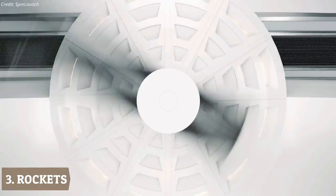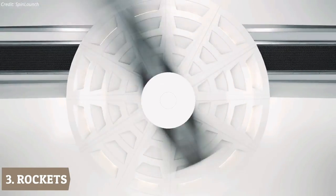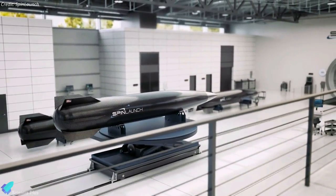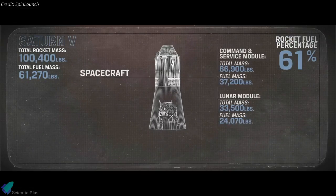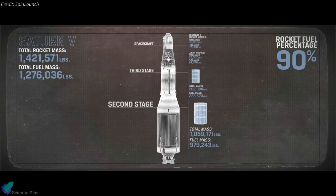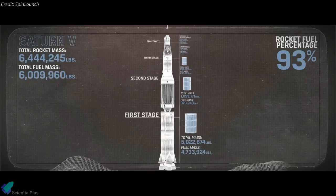According to Spin Launch, most of the launch work is done by the centrifuge, therefore rockets don't have to be built with extreme efficiency in mind under this framework. Today's rockets can only handle payloads that take up a relatively small fraction of their overall mass, as most of that weight has to be designated for rocket fuel.